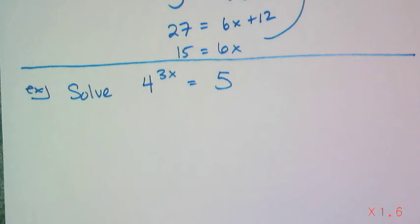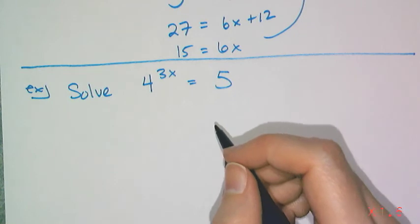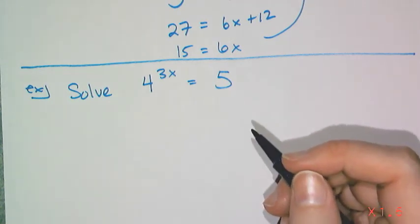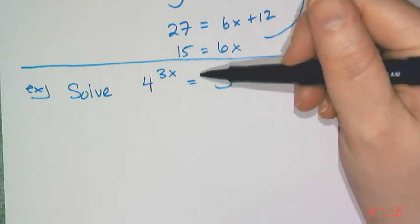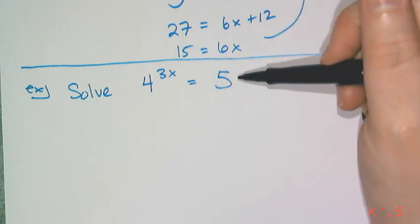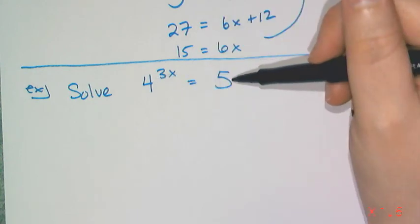Now we come to the final example, where we see why we have logs at all. Because if I look at this expression, 4 to the 3x equals 5, I can't really convert 4 and 5 to be of the same base. That's not at all easy.